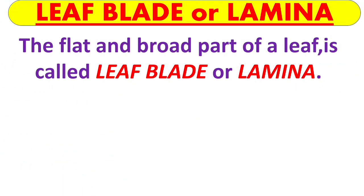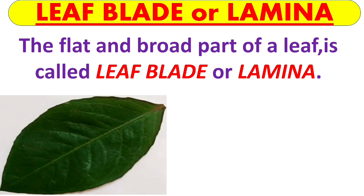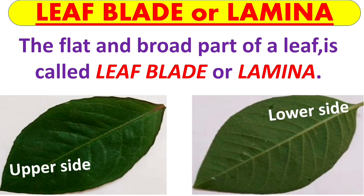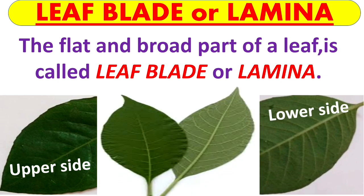Now let us have a look at these parts of the leaf in detail. The first one is the leaf blade. The flat and broad part of a leaf is called the leaf blade, or lamina. If you take a leaf, this is the upper side of the leaf and this is the lower side of the same leaf. What do you notice? The upper and lower sides of the leaf blade are slightly different in color. The upper side is smooth and dark, and the lower side is rough and light.